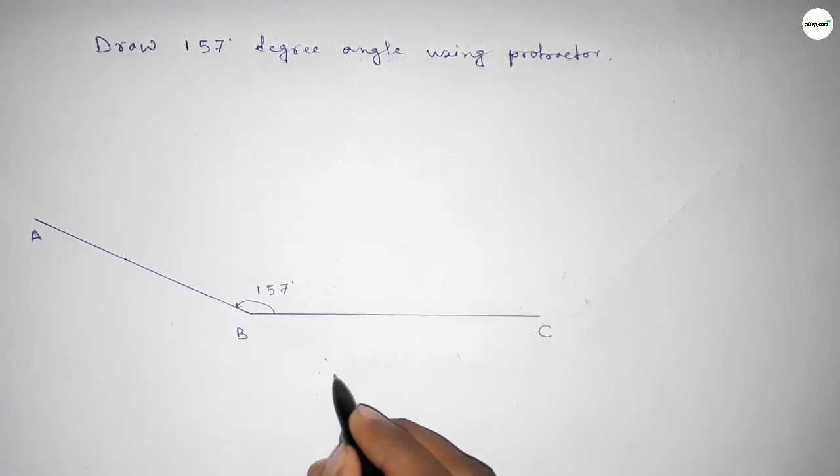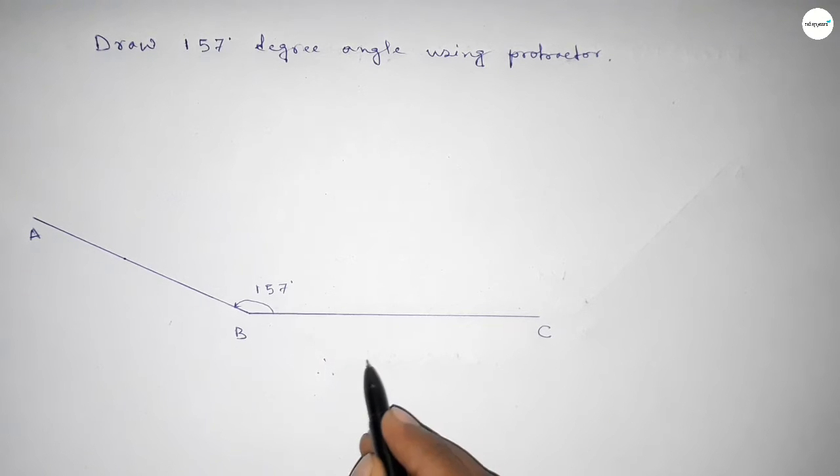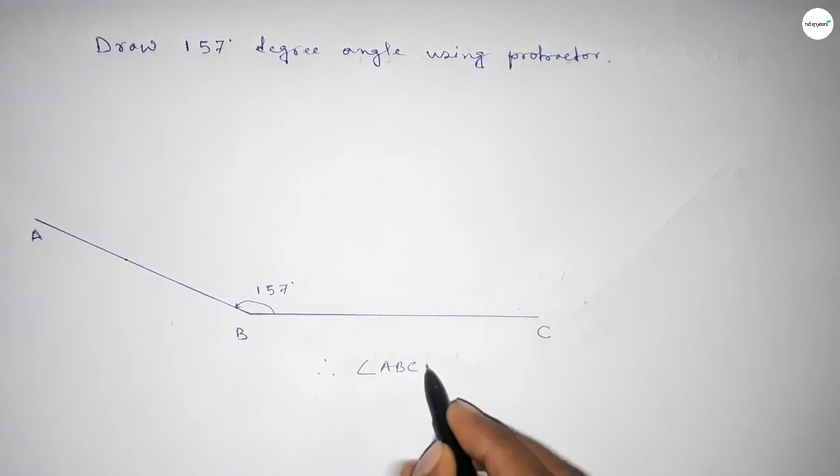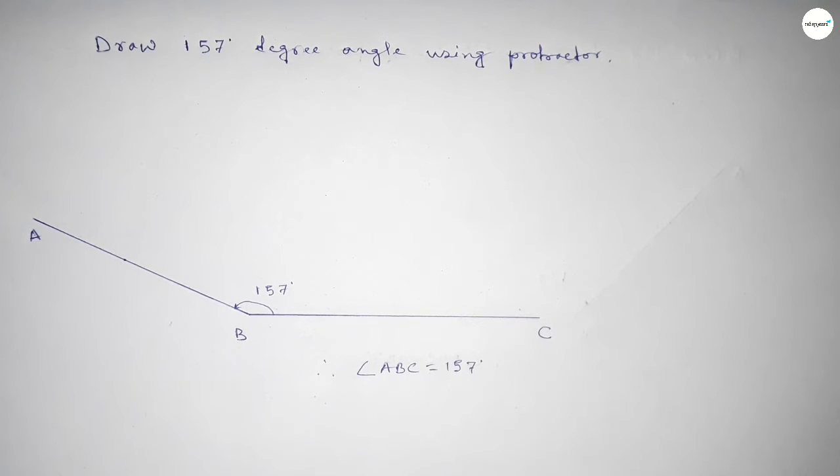Therefore, angle ABC equals 157 degrees. That's all. Thanks for watching. If this video is helpful to you, please...